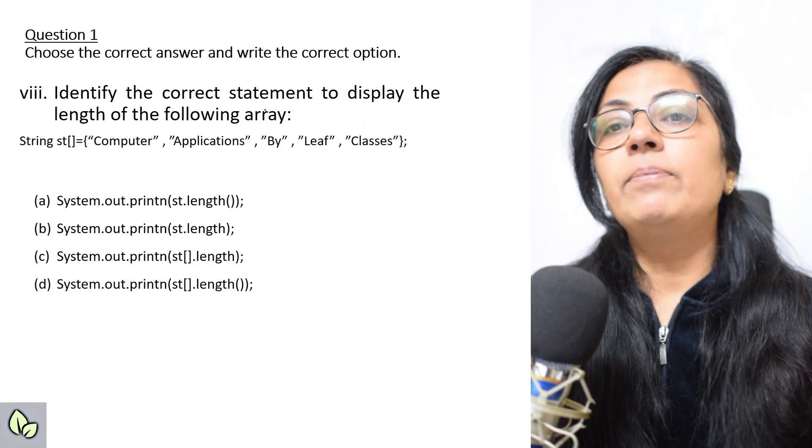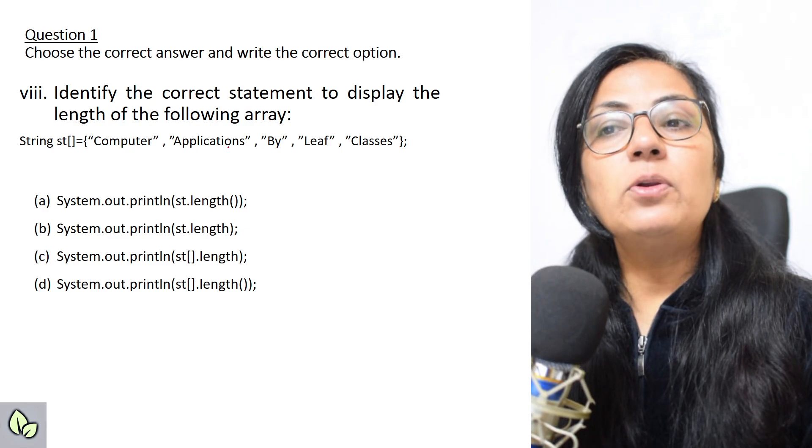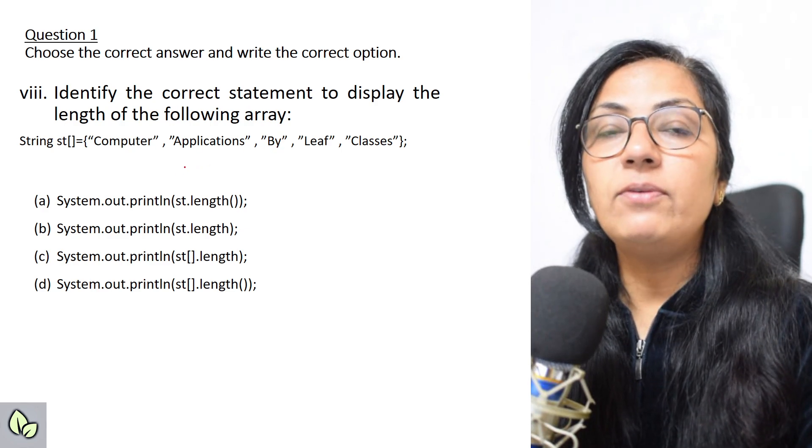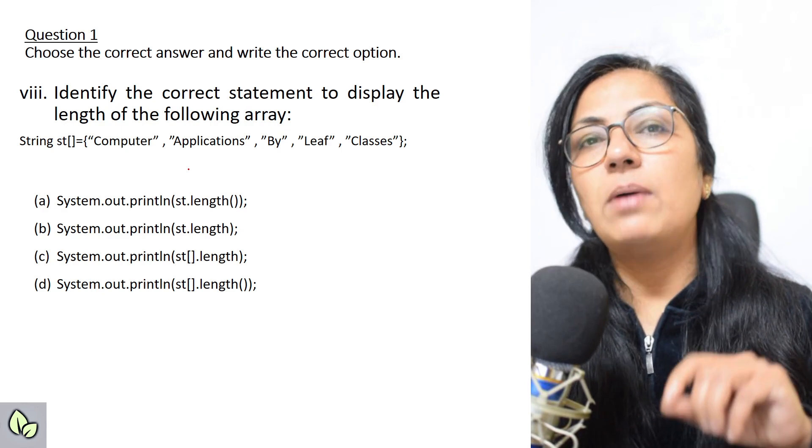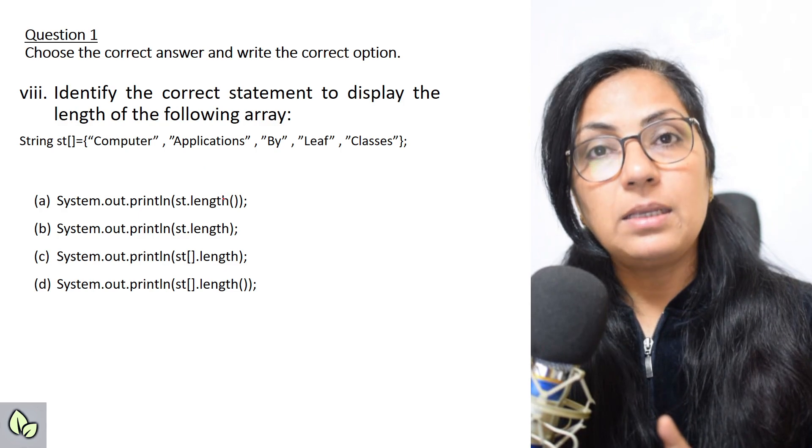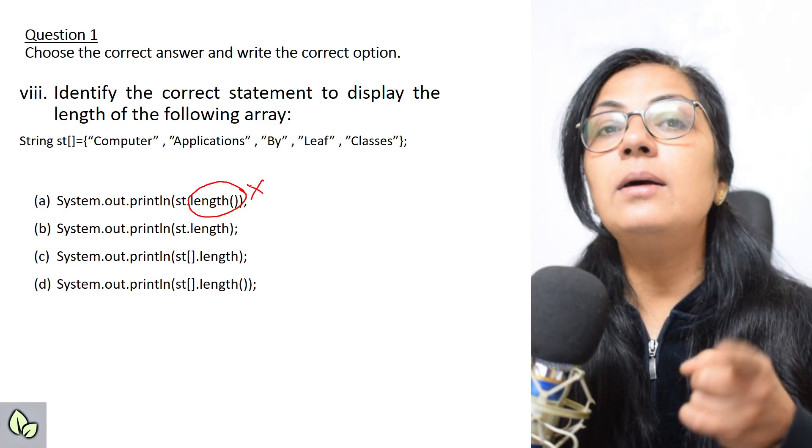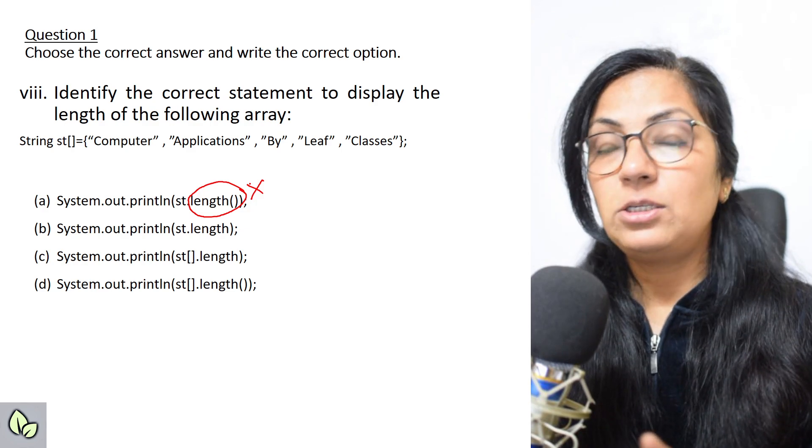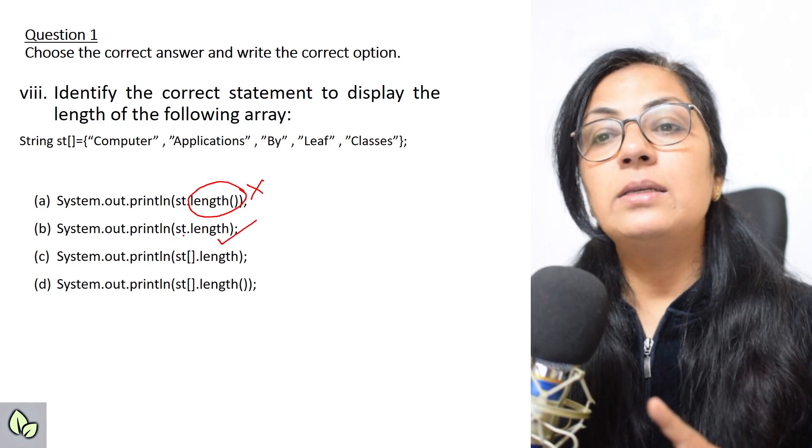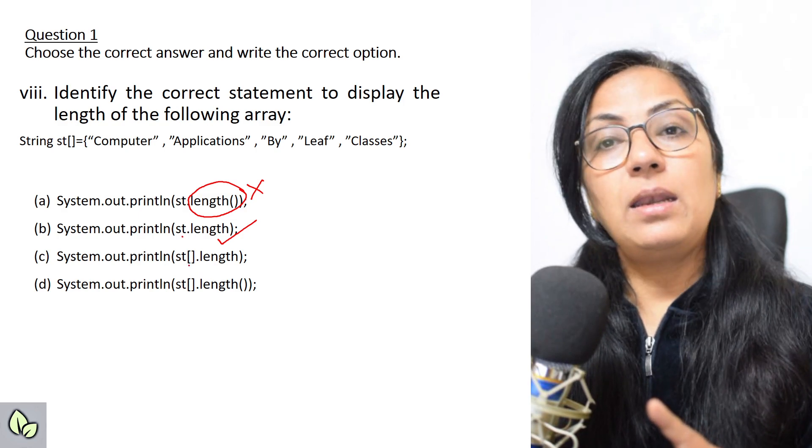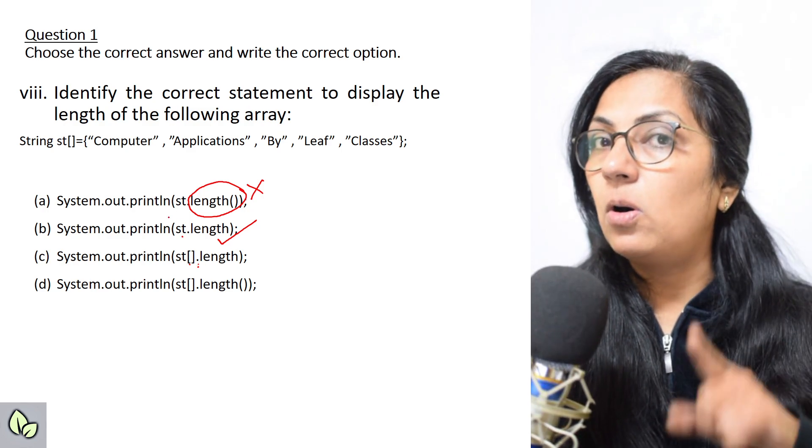Identify the correct statement to display the length of the following array: String st equals to computer, applications, by, leaf, classes. Always keep in mind, whenever you have to find the length of the array, whether it is int, double, char, string, anything, then length is used. But this function is used to find the size of the string, not of the array. For finding the length of the array, always length, and here the array name will be there. Whenever we are finding, we don't put the square brackets. So option b is the correct answer. This is applicable for all data types.